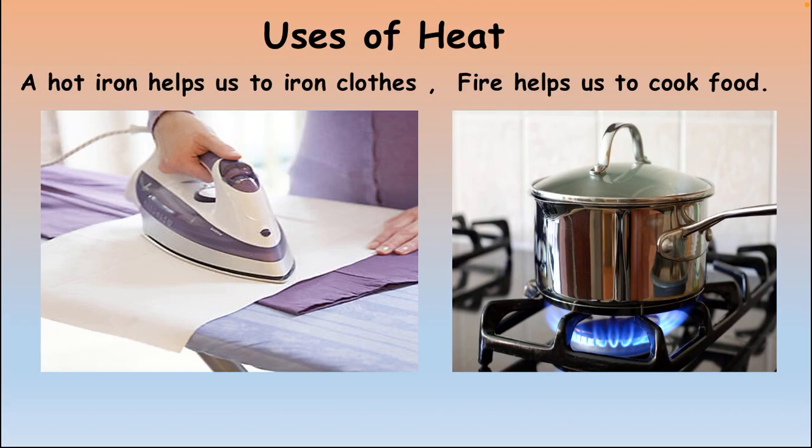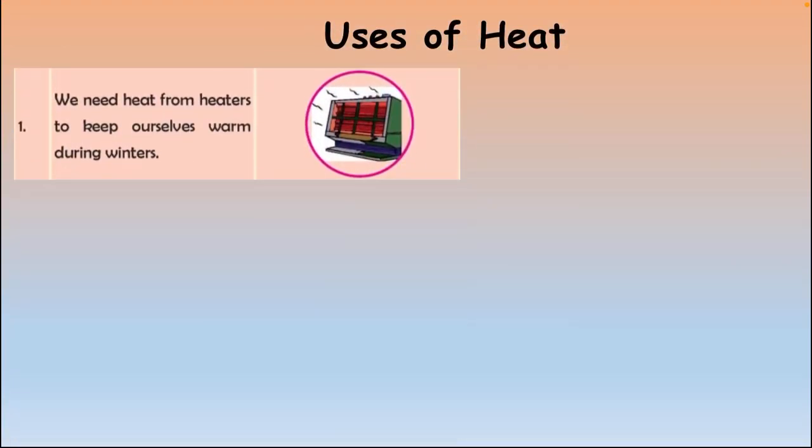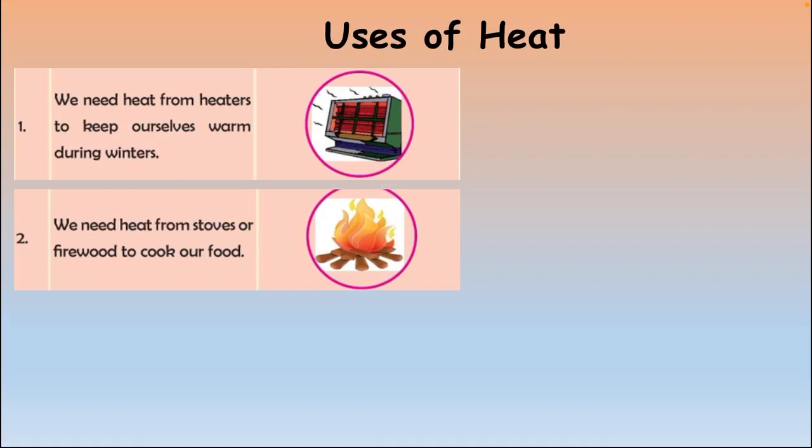There are other examples of how we use heat. A hot iron helps us to iron clothes, and fire helps us to cook food. When we wash our clothes, there are wrinkles on them. When we switch on the iron, it becomes hot and produces heat, and with that heat we iron our clothes. When we want to cook food, we turn on the stove, the pot gets hotter, and with the help of heat we cook our food. These are two uses of heat that we use on a daily basis.